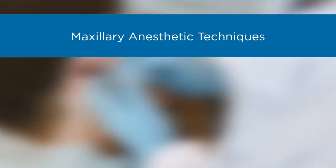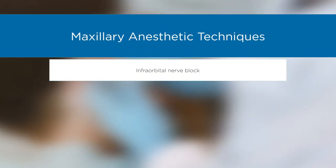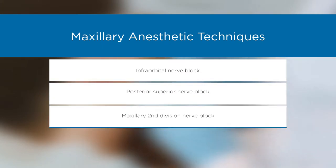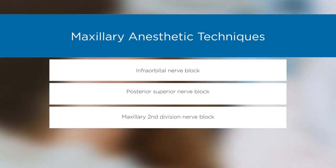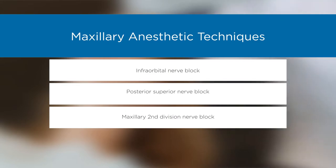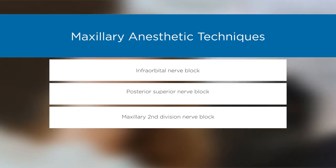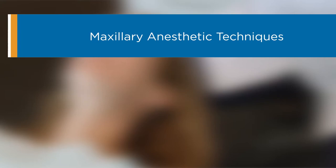In cases of acute inflammation or infection, supraperiosteal injections may be ineffective or even contraindicated. Three other approaches for anesthesia in the maxilla may be alternatives: the infraorbital nerve block, the posterior superior nerve block, and the maxillary second division nerve block. These techniques are easily learned and can be especially helpful with procedures involving multiple teeth.